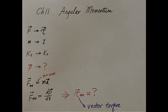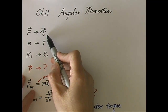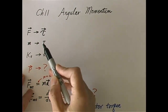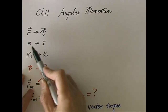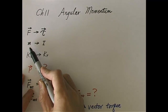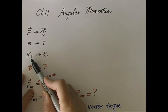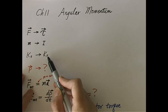Then we moved on to dynamics. We introduced torque, which replaced force. We introduced rotational inertia, which replaced mass. And of course, kinetic energy of translational motion corresponds to kinetic energy of rotation.